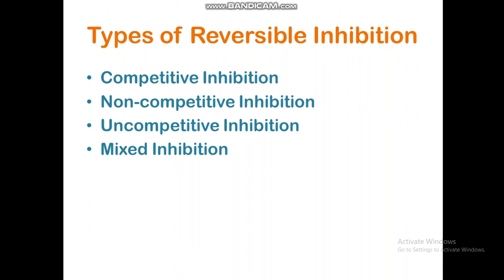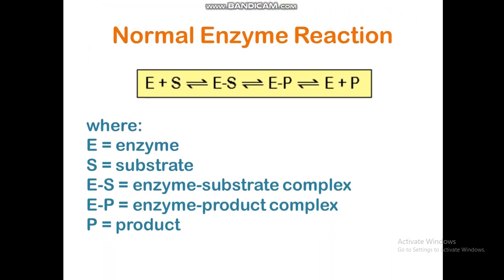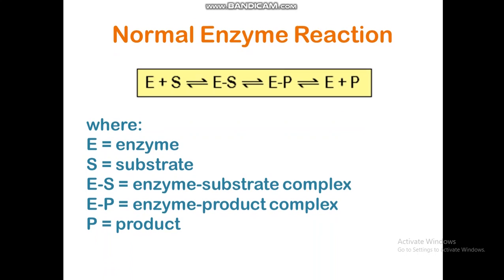Types of reversible inhibitions are competitive inhibition, non-competitive inhibition, uncompetitive inhibition, and mixed inhibition. A normal enzyme reaction occurs when the enzyme binds with the substrate, making an enzyme-substrate complex, which is then converted into an enzyme-product complex, and then the product is released from the enzyme.